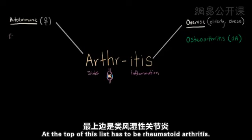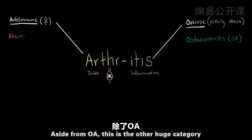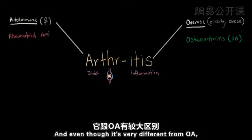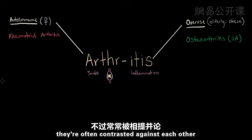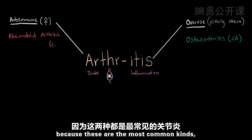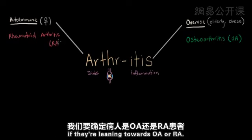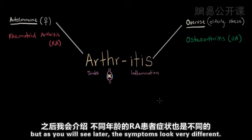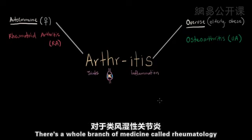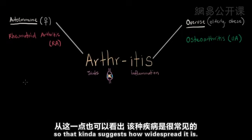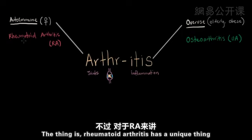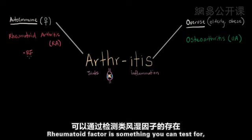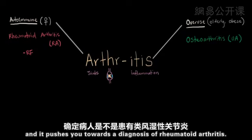At the top of the autoimmune list is rheumatoid arthritis, or RA. Aside from OA, this is the other huge category of arthritis. Even though it's very different from OA, they're often contrasted against each other as the two most common kinds — when diagnosing, we always want to see if the patient is leaning towards OA or RA. RA patients may be younger on average, but the symptoms look very different. There's a whole branch of medicine called rheumatology that deals with these problems. Rheumatoid arthritis has a unique marker detectable in blood testing called rheumatoid factor, or RF, which pushes you towards that diagnosis.